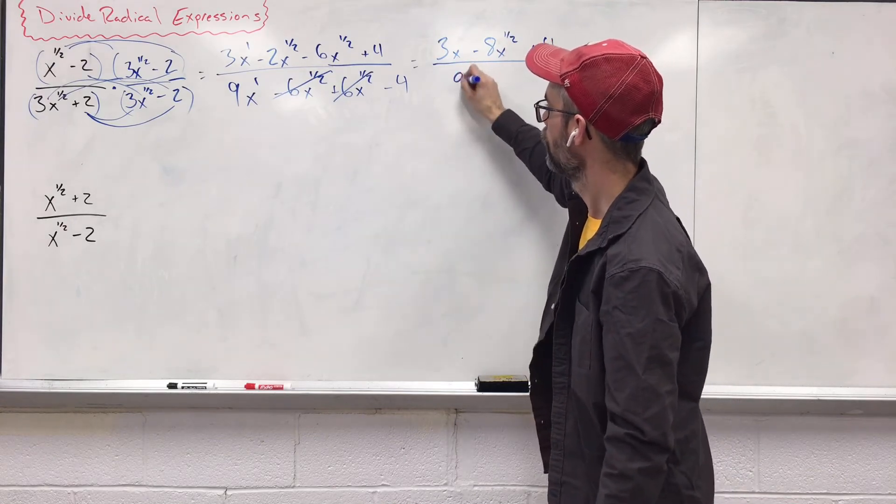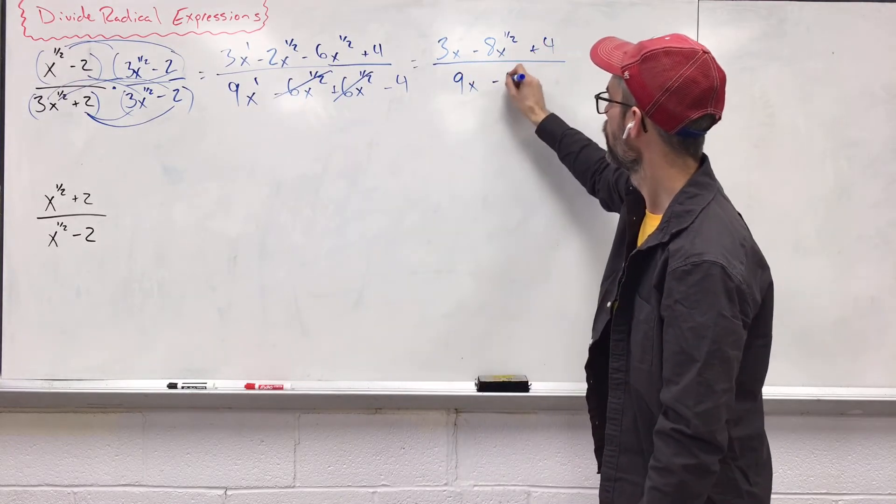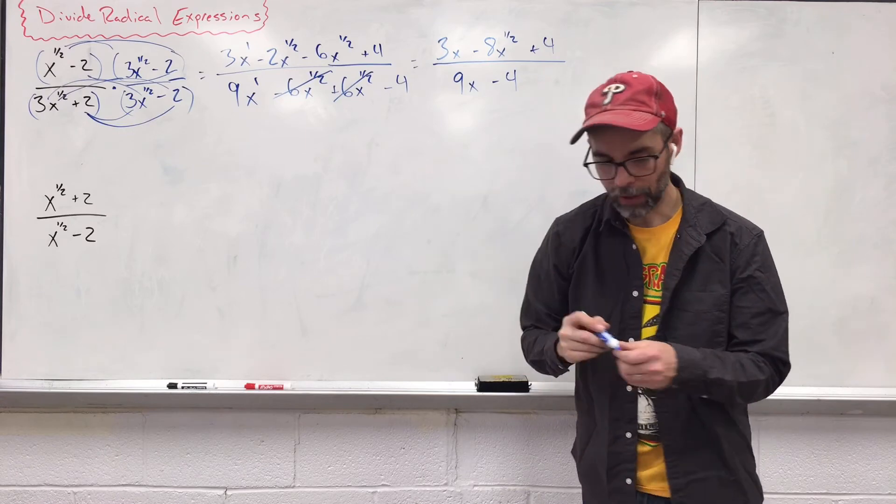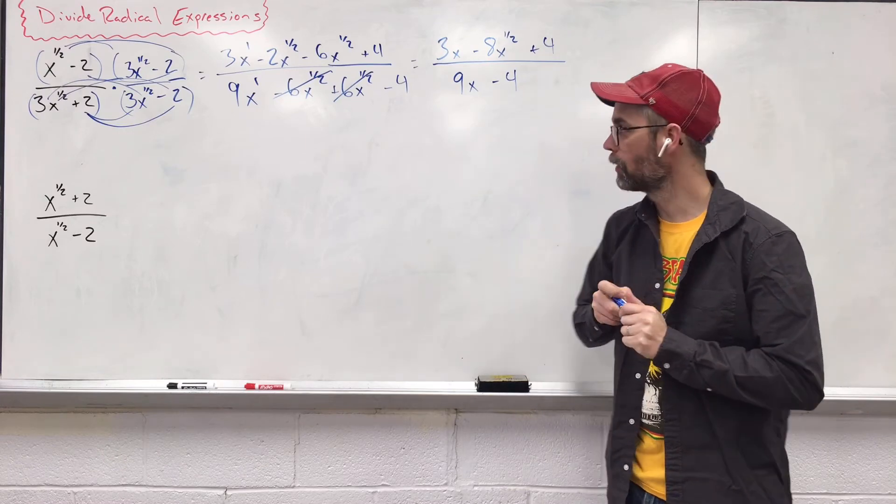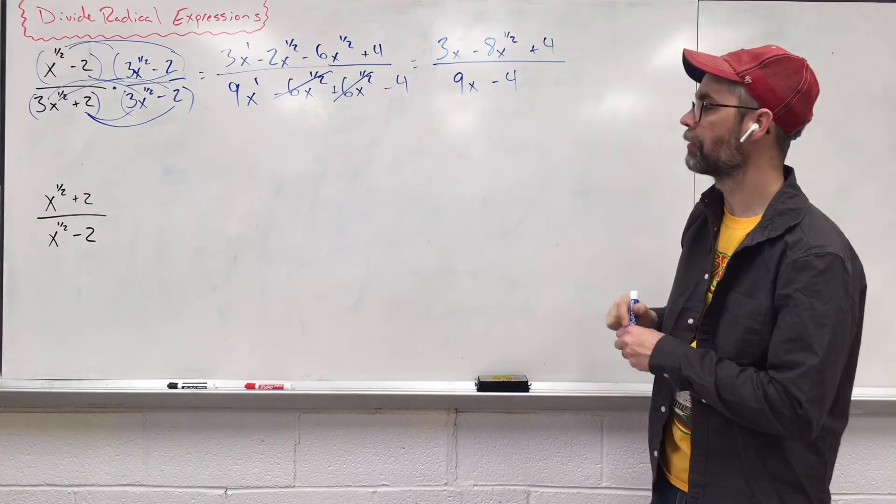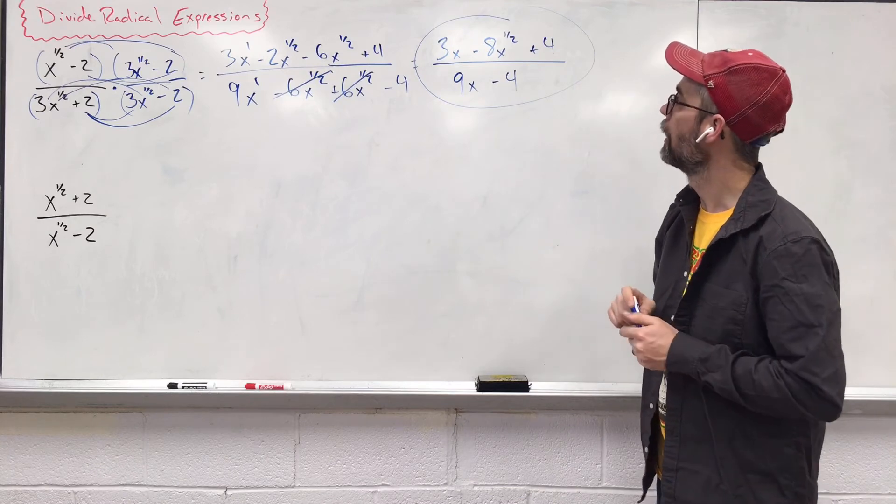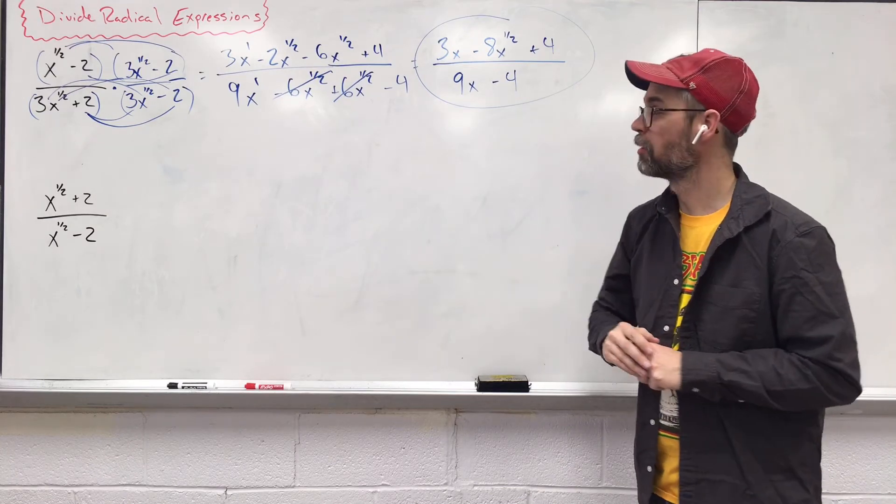On the bottom, 9x, we do not need the 1. And then minus 4. Now, I said something about having no fraction exponents. It's fine as long as they're upstairs, just not downstairs. Big ugly answer, but that's what we do to simplify.